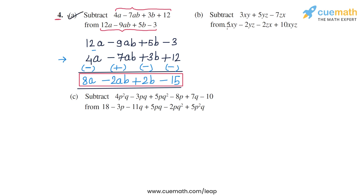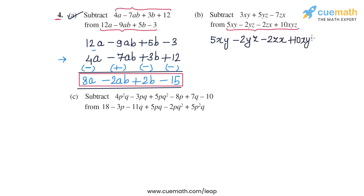Now coming to the second part, the expression from which we have to subtract is 5xy minus 2yz minus 2zx plus 10xyz. Let's write this in the first row, as this is the expression from which we have to subtract. The expression which we have to subtract will be written below it such that the like terms are written one below the other.